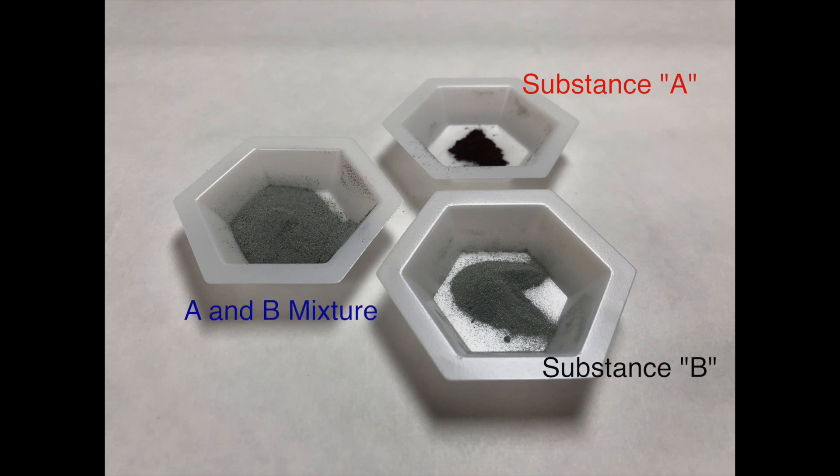The powder on the left is actually a mixture of Substances A and B. If I wanted to separate Substance A from the mixture, I would do this by adding both powders to a liquid which only Substance A is soluble in. This means that Substance A will dissolve in the liquid, while Substance B will remain a powder.